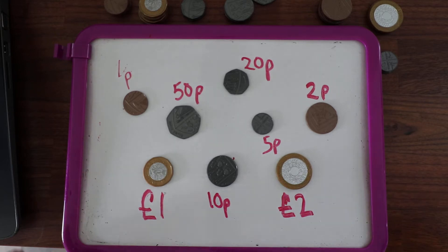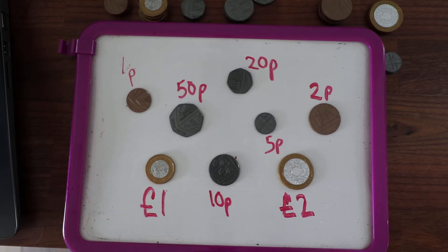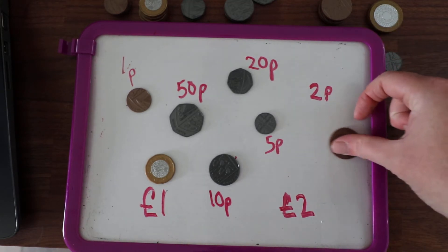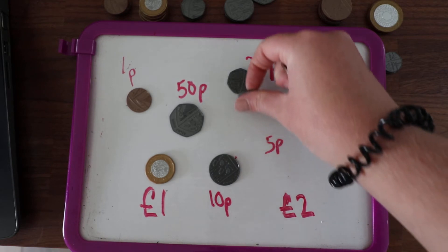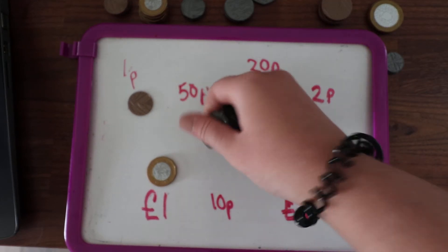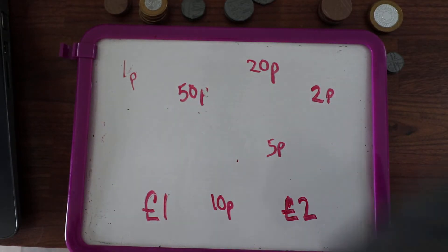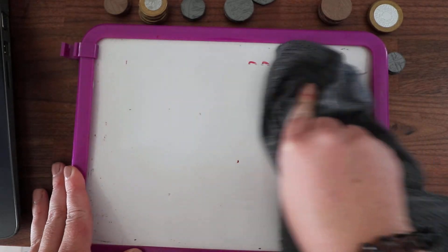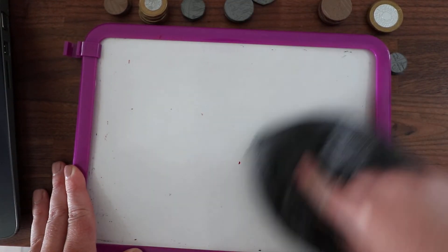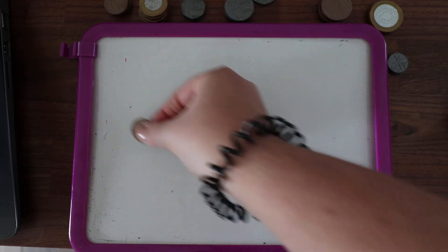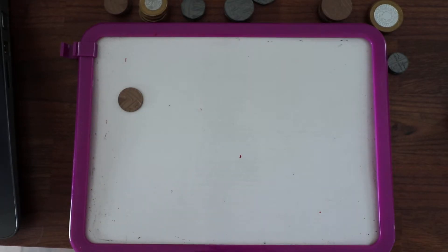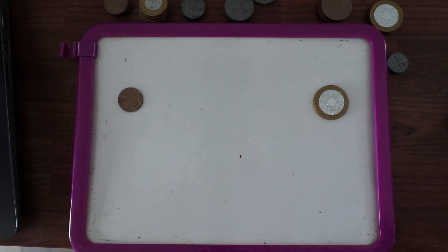Next, I'm going to put them in order by value — so not in size but in value — from the smallest value to the largest value. If you've got coins at home, fantastic; if not, you could draw them. I'll give you a hint: I'm going to start with one p and end with two pounds. Have a go and put them in order.